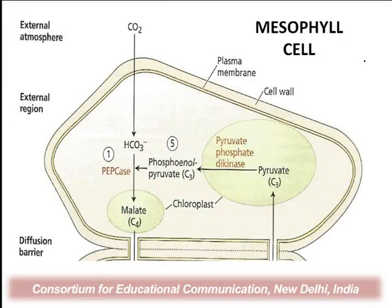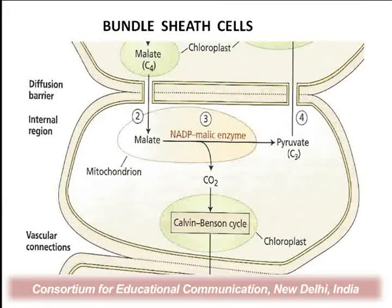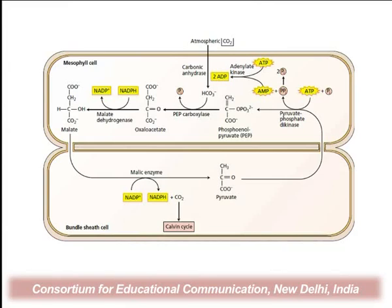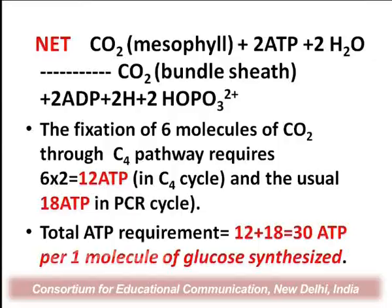This is an additional expenditure the plant must incur if it wants to deliver carbon dioxide in concentrated form for the Calvin cycle and minimize the wasteful process of photorespiration. Looking at the overall reaction, the NADPH utilized is regenerated, so there is no net energy input as NADPH — but two ATP are distinctly utilized per carbon fixed. For the fixation of six molecules of carbon dioxide through this pathway, one requires 12 molecules of ATP within the C4 cycle itself.